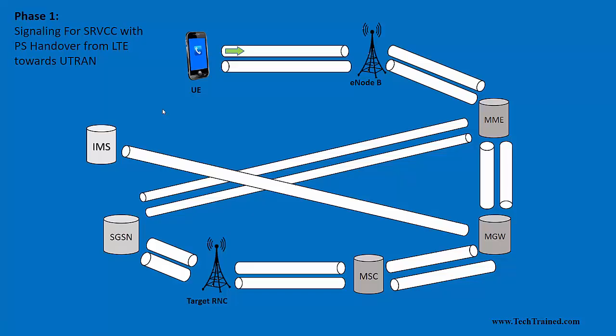Here we are going to discuss the procedure or operation of how SRVCC works. We will take an example assuming that both packet switch and voice are running on LTE, and what would happen if the UE goes into bad coverage of LTE and how SRVCC is going to transfer the call from LTE towards UMTS or UTRAN. Just like any handover, there are two phases.